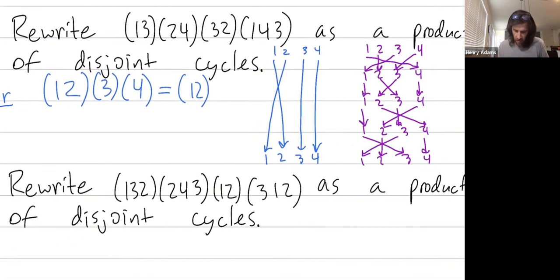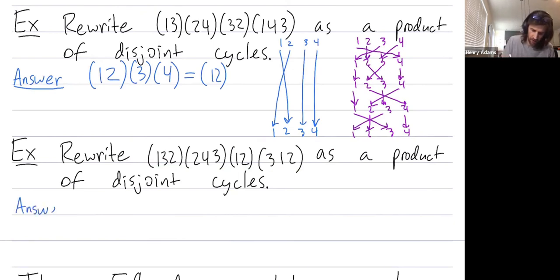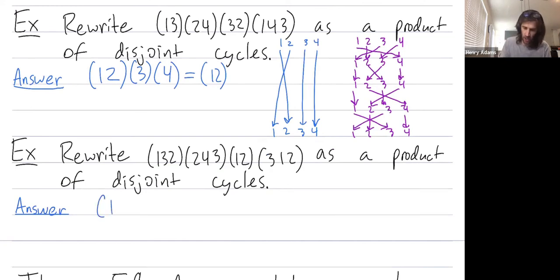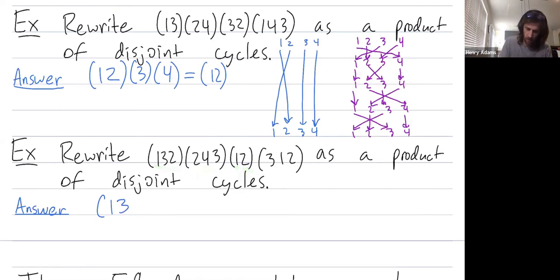Let's do one more example — rewrite this permutation as a product of disjoint cycles. You don't actually need to show much work; that's the beauty of cycle notation, you can simplify things quickly. First, figure out where one goes: one gets mapped to two, which maps back to one, which stays put, which goes to three — so one gets mapped to three. Next, where does three go? Three goes to one, which goes to two, which goes to four, which stays put — so three goes to four.